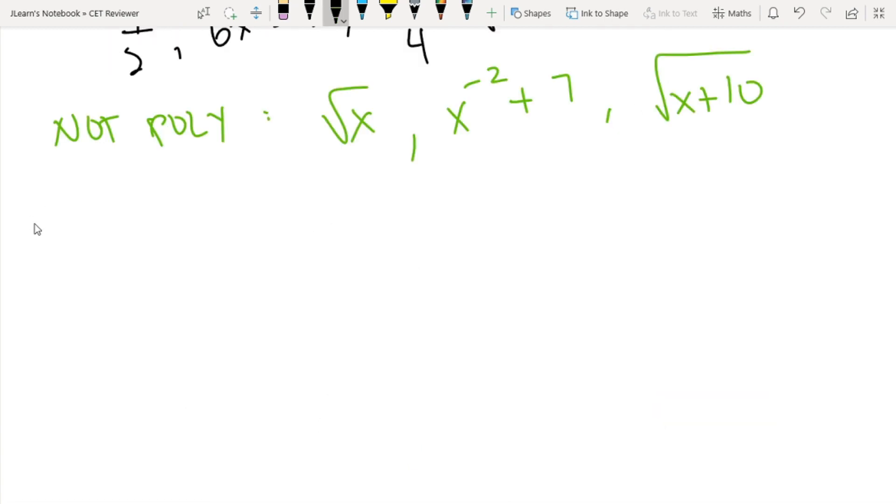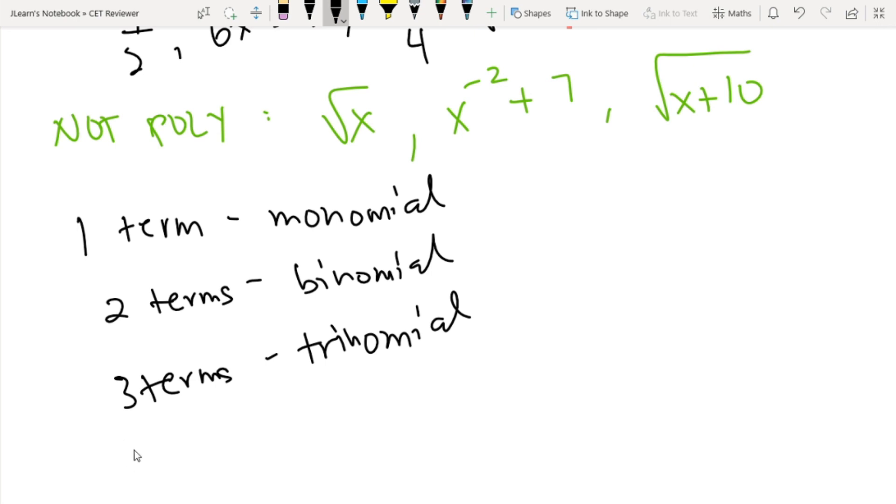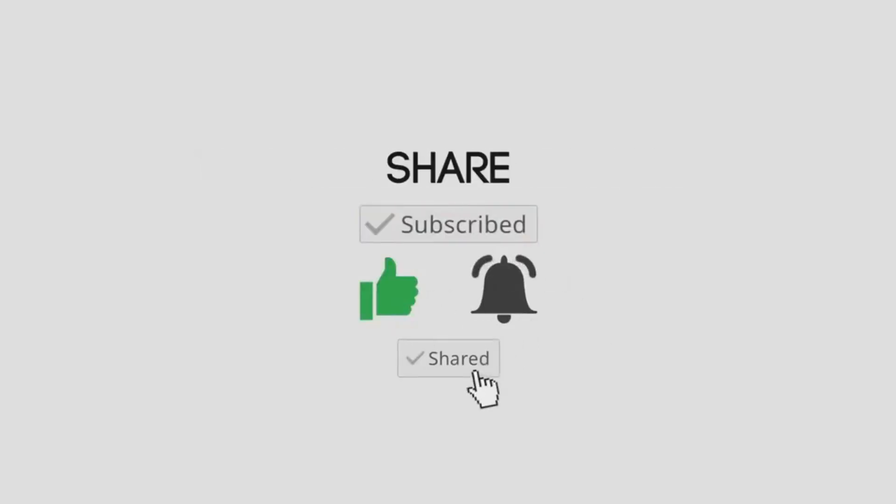So we have special terms for polynomials. So kung yung polynomial with one term lang we call them a monomial. Then kung two terms we call them a binomial. Pagka three terms, I think you can guess by now, it is a trinomial. Pero kung four terms or at least two or more terms, we call them a multinomial.